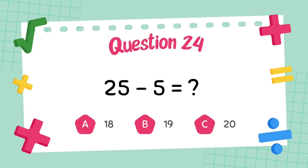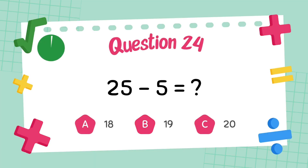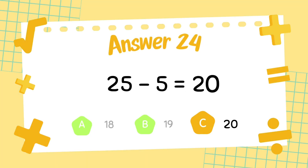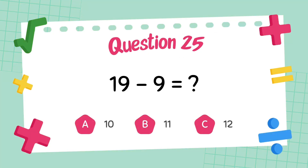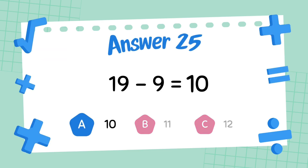What is 25 minus 5? The answer is 15. What is 19 minus 9? The answer is 10.